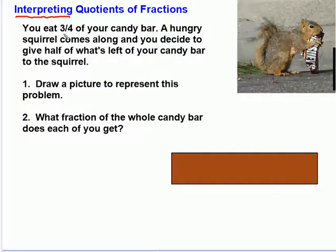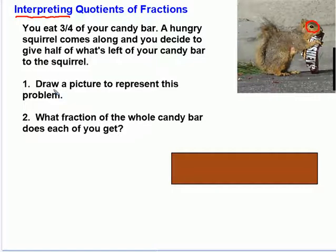We're told of a problem. You eat three-fourths of your candy bar. A hungry squirrel comes along and you decide to give half of what's left of your candy bar to the cute little squirrel. Anyway, you're going to draw a picture to represent this problem, and then we'll find out what fraction of the whole candy bar each of us gets.